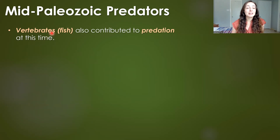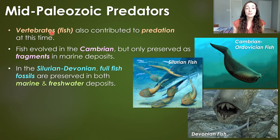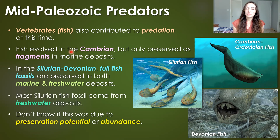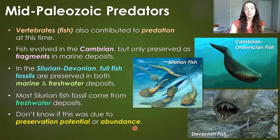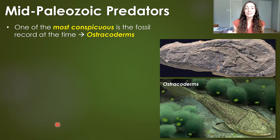Invertebrates weren't the only predators in the mid-Paleozoic seas — we had vertebrates, we had fish, and we had large fish. In the Cambrian there were fish, but the only fossils we have are fragments and they're not fully preserved. It wasn't until the Silurian and Devonian where full fish fossils have been found preserved in both marine and freshwater deposits. Most Silurian fish fossils come from freshwater deposits, but we know fish first evolved in the ocean because all Cambrian and Ordovician fish fossils are in marine deposits.